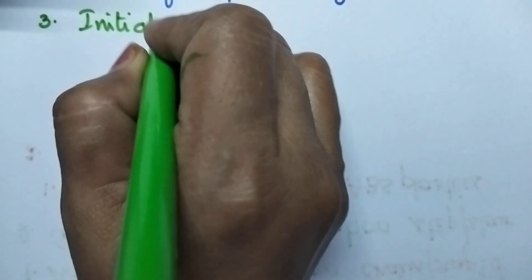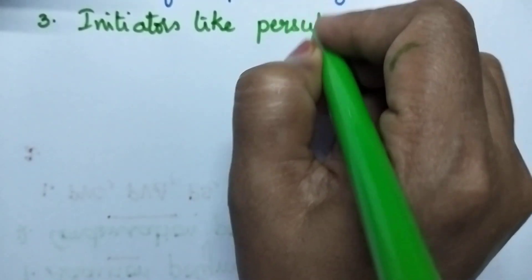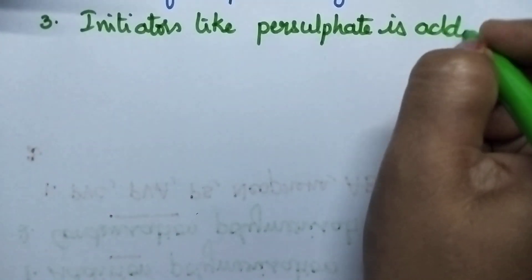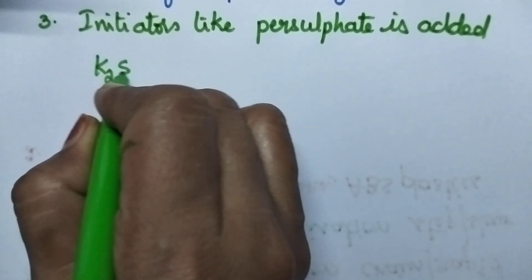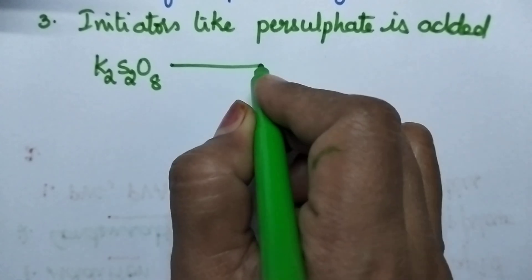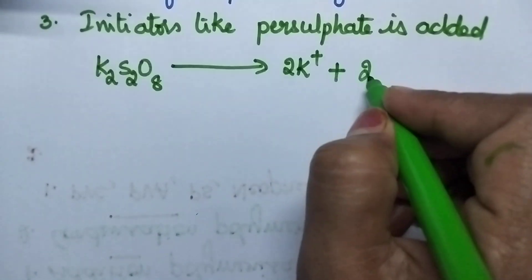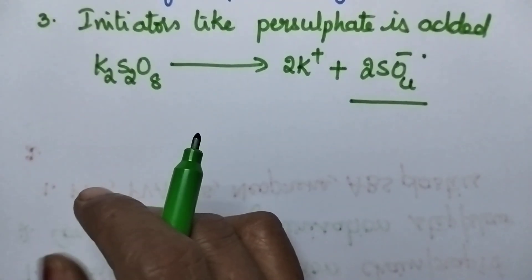Then, initiators like persulfate are added. Whenever persulfate is added, it dissociates and results in the formation of ion radicals.